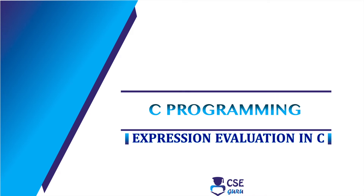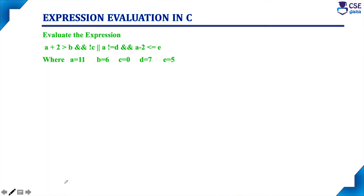Welcome to CSE Guru. In this session, we will discuss how to evaluate an expression in C. The expression is A plus 2 greater than B, logical AND, NOT C, OR A not equal to D, AND A minus 2 less than or equal to E.